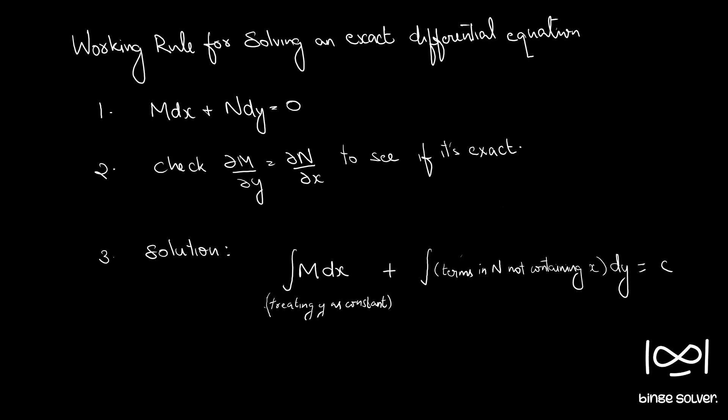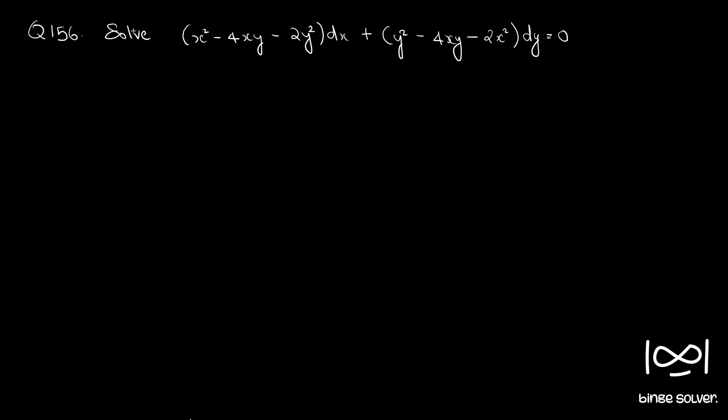If you are unfamiliar with this working rule, please check out the previous video for a better understanding. Now we will start solving questions based on this. Question 156: Solve (x² - 4xy - 2y²) dx + (y² - 4xy - 2x²) dy = 0.